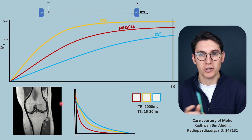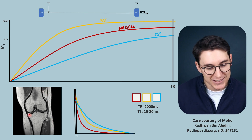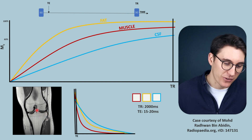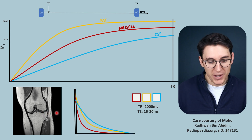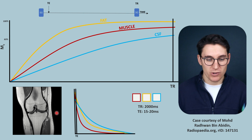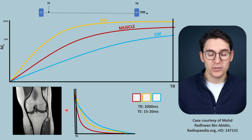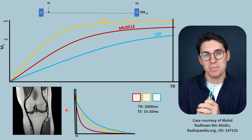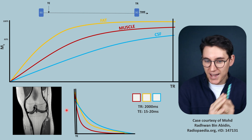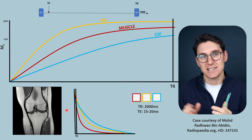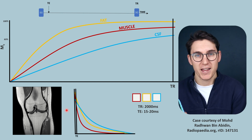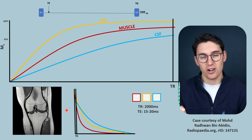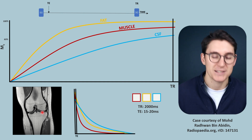In more advanced pulse sequences we can negate the fat signal, leaving only bright water signal, which makes it much easier to identify tears in ligaments or menisci by seeing contrast between bright fluid and surrounding low-signal structures. To summarize: changing TR highlights T1 differences, changing TE highlights T2 differences. Long TR and long TE gives a T2 weighted image. Short TR and short TE gives a T1 weighted image. Long TR and short TE gives a proton density weighted image.